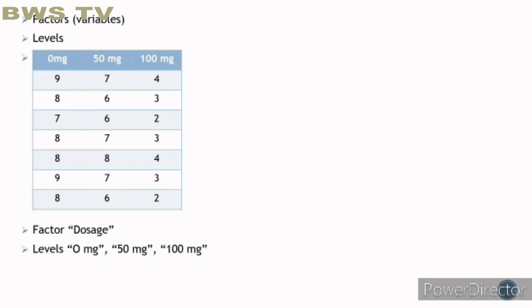ANOVA has factors and levels. In this image, your factor is dosage, and your levels are 0 milligrams, 50 milligrams, and 100 milligrams.